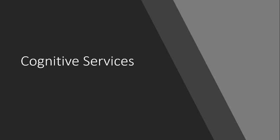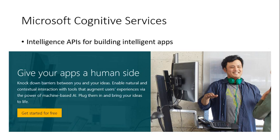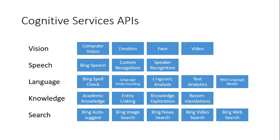Now let's talk about Cognitive Services. Cognitive Services includes more than 21 APIs that fall into five categories: Vision, Speech, Language, Knowledge, and Search. Microsoft Cognitive Services is a set of intelligent APIs for building equally intelligent applications, currently offering more than 21 different APIs for analyzing images, videos, text, and much more. For more information, you can visit microsoft.com/cognitive-services.